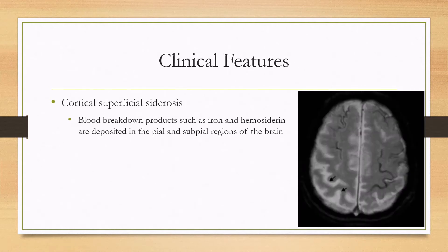These hemorrhages can also extend to the subarachnoid space and cause subarachnoid hemorrhage. There's another feature called cortical superficial siderosis, thought to be due to chronic components of subarachnoid hemorrhage where iron and hemosiderin break down and are deposited in the pial and subpial regions of the brain. You can see this on MRI.